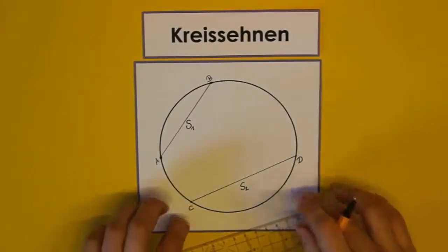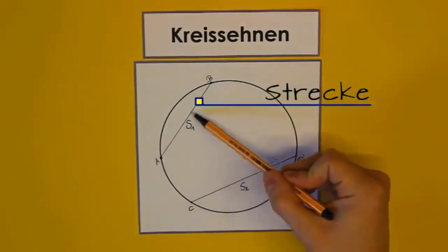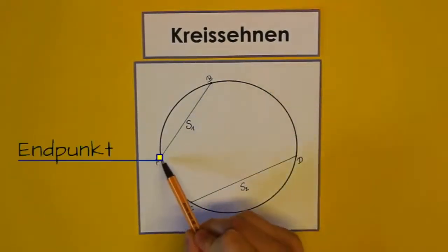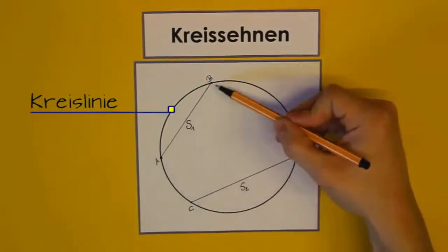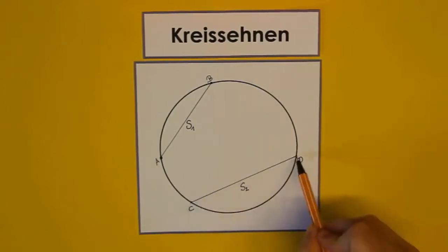Also noch einmal: eine Kreissehne ist eine Strecke, deren Endpunkte auf einer gemeinsamen Kreislinie liegen. Das ist bei S1 so, wie ihr gerade gesehen habt, aber auch bei S2.